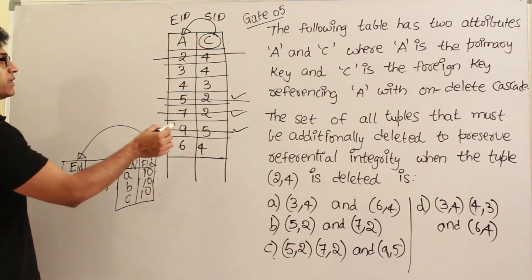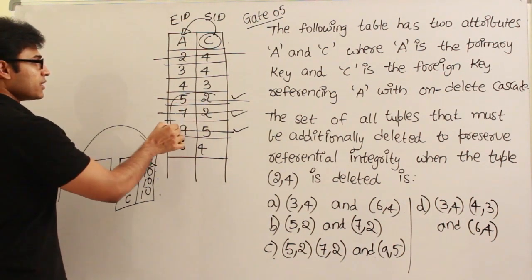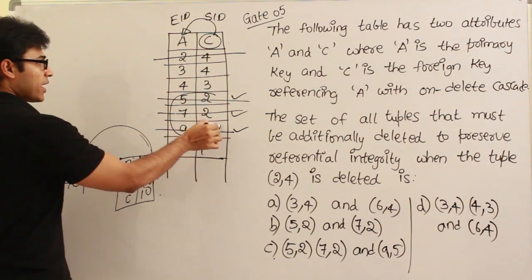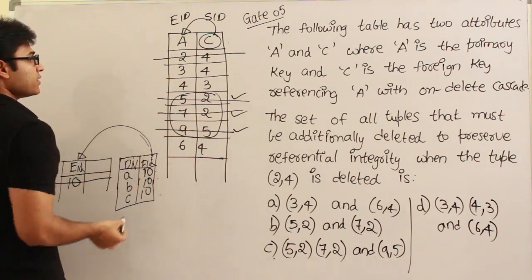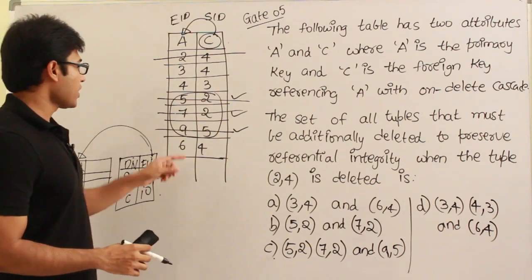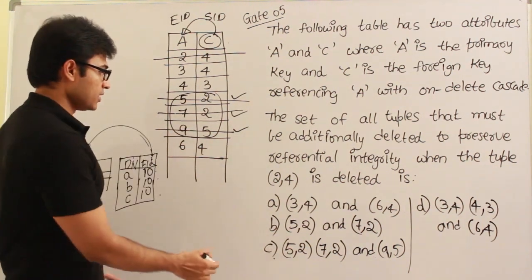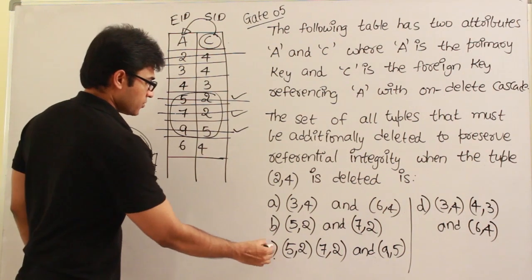Therefore, only these three additional deletions should be done in order to preserve referential integrity. The tuples (5, 2), (7, 2), and (9, 5) have to be deleted. Option C is the answer.